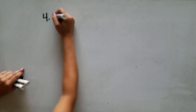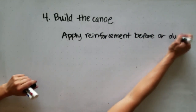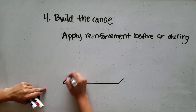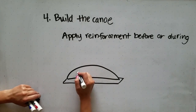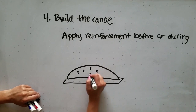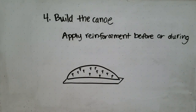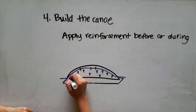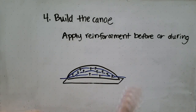The fourth step is actually building the canoe. You can apply the reinforcement either before you construct it or during the construction process. The Nevada Concrete Canoe Team likes to place their reinforcement before casting concrete. They use a pre-stressing tendon system where they apply grade screws first as depth gauges, then tie pre-stressing cables to those grade screws.